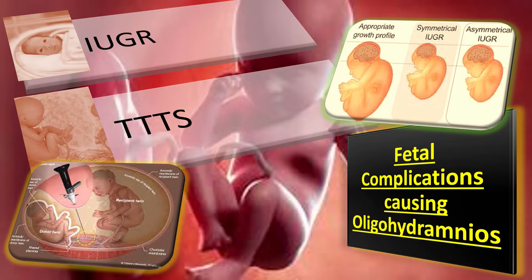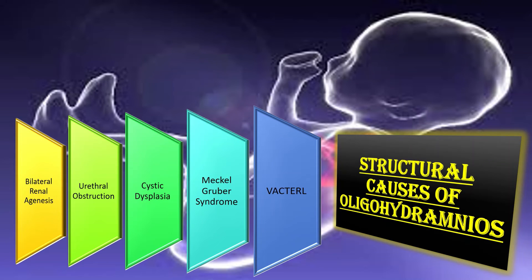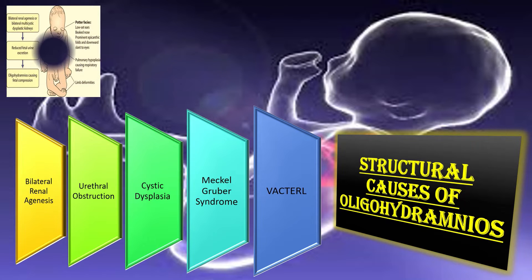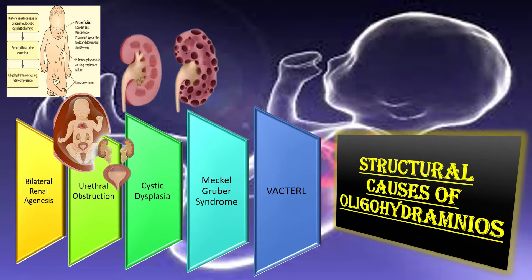Structural causes in the fetus responsible for oligohydramnios include: first, bilateral renal agenesis or dysplasia, which occurs for example in Potter syndrome; second, urethral obstruction; third, cystic dysplasia; and fourth, Meckel-Gruber syndrome.